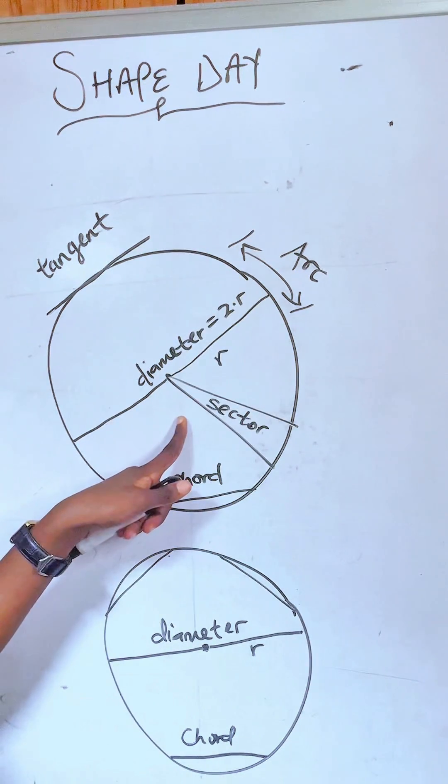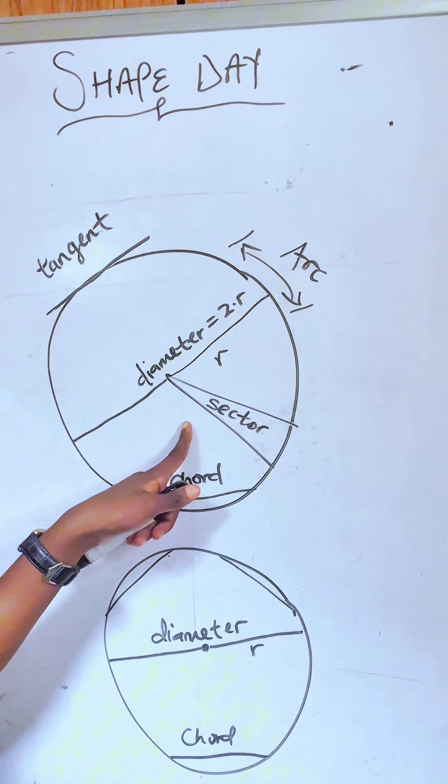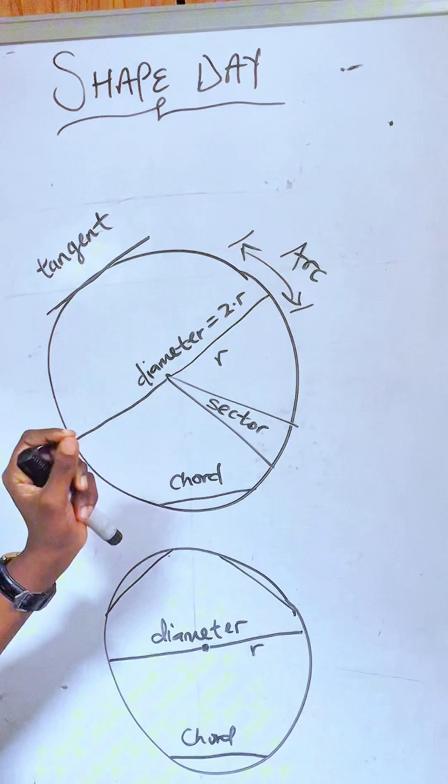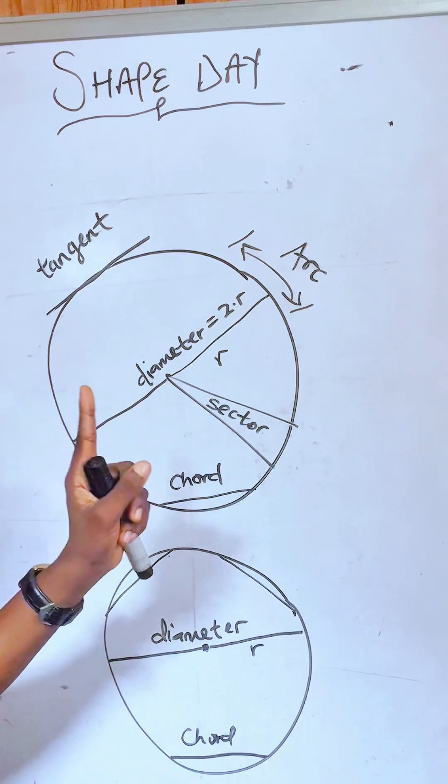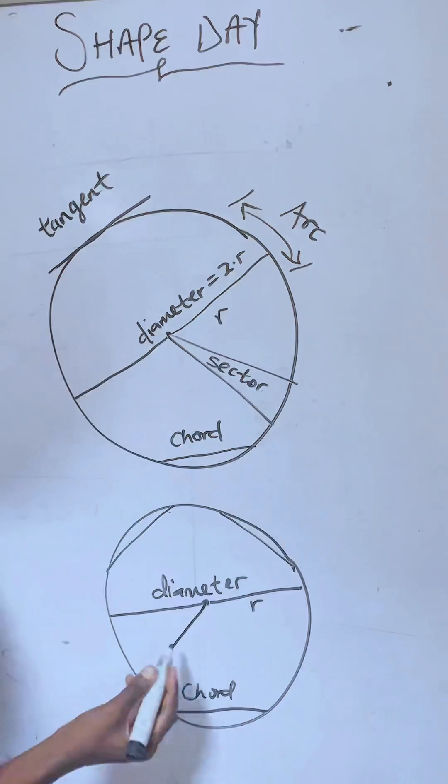The sector of a circle is defined as the area that is enclosed by two radii. When we have radius, radius means one, radii means more than one. This is one radius. Another radius giving you a sector.